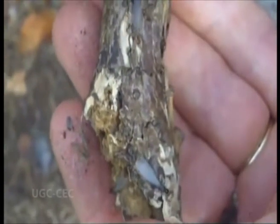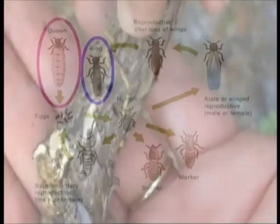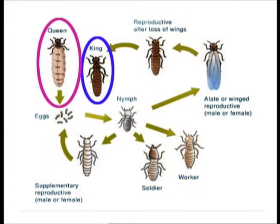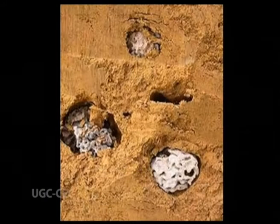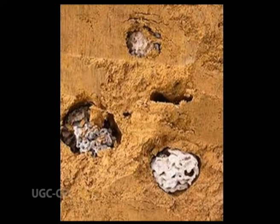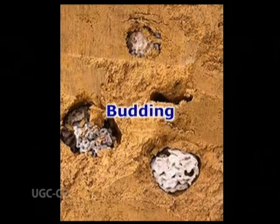In every mature colony there also develops an annual population of young winged reproductives that swarm from the parent nest for a short mating flight. After flight, the delicate wings break off and the new king and queen set out to find another nest site and start a new colony. Large colonies with multiple reproductives may also split into two or more daughter colonies, a process known as budding.